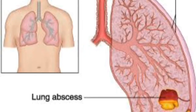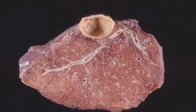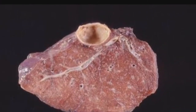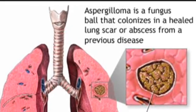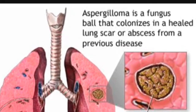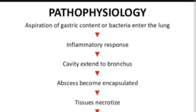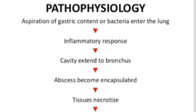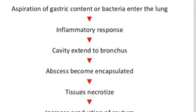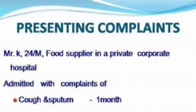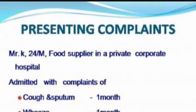Bronchoscopy is indicated if a foreign body or tumor is suspected. Complications include bronchopleural fistula and empyema formation, pericarditis, massive hemoptysis, metastatic infections, and secondary amyloidosis, which may develop in chronic lung abscess.